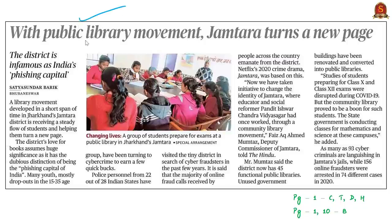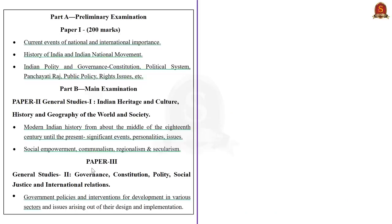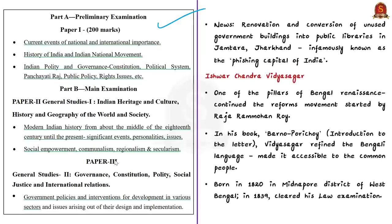This news article is about a reform initiative in Jamtara district of Jharkhand. This was a city where the social reformer Ishwar Chandra Vidya Sagar once worked. The syllabus relevant for the analysis of this news article is highlighted for your reference. Jamtara is infamously known as the phishing capital of India — infamously meaning it is known for undesired or wrong reasons. Phishing is a cyber crime.